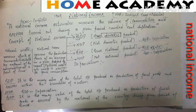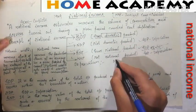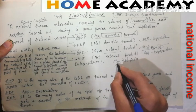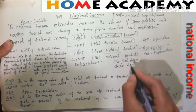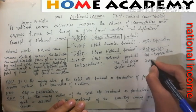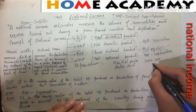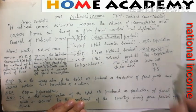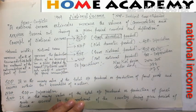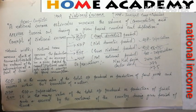National income is calculated using two values: at market price and at factor cost. For example, the GDP growth rate from 2014–15 had two values: 7.4% at market price and 7.5% at factor cost. So this is how we calculate using market price and factor cost. GNP calculated at market prices includes indirect taxes and subsidies. NNP can also be calculated in two ways — at market price and at factor cost.